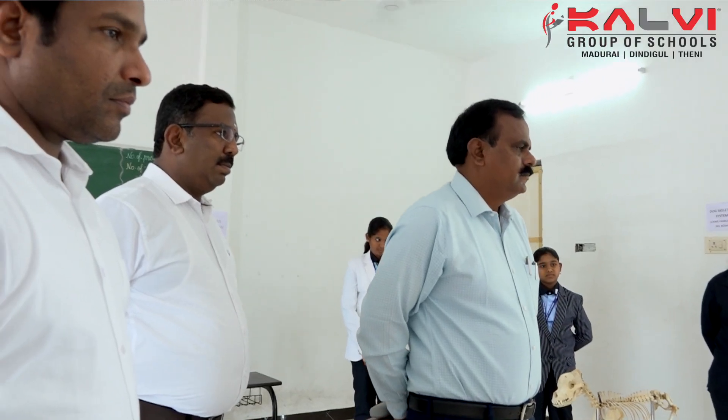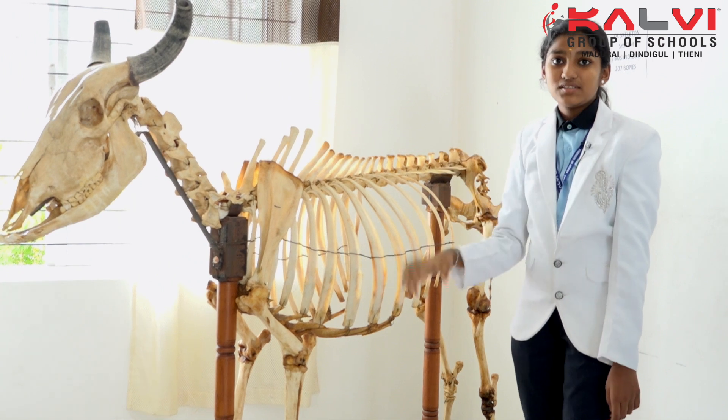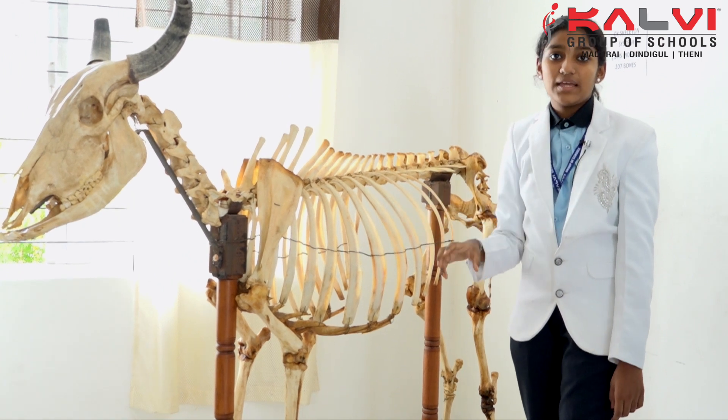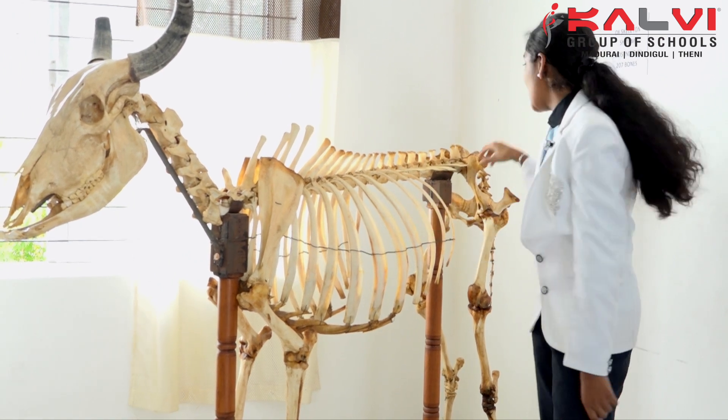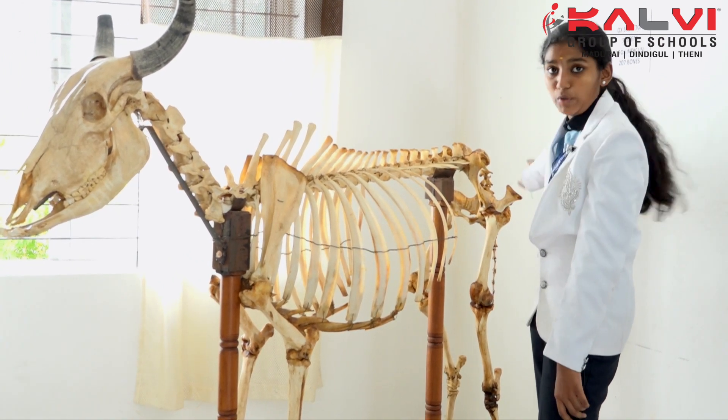This is the hip region. Os coxae — os means bone and coxae means hip. This is the ilium, ischium, and pubis.